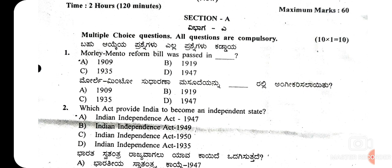So the first question is: the Morley-Minto Reform Bill was passed in which year? This bill was passed in the year 1909. The answer is A — 1909.